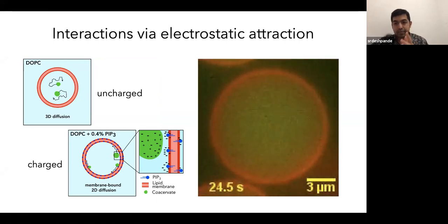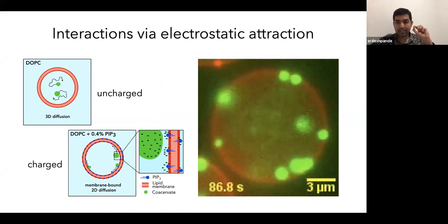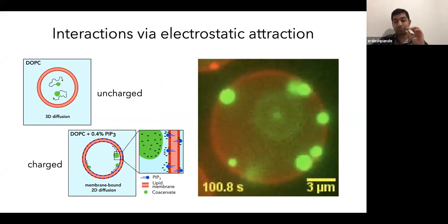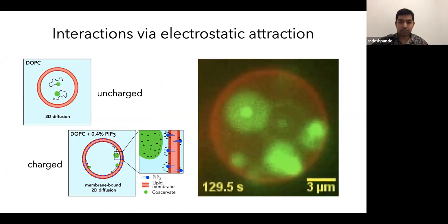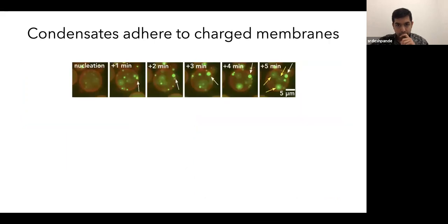We know from zeta potential measurements that our polylysine ATP condensates are a little bit positively charged. And normally they're nicely diffusing inside the liposome. But what if we make our membrane a little bit negatively charged? Would then they stick to the membrane? Let's have a look. So again, this is a pH triggered condensation process. And you can see that as soon as these condensates form throughout the lumen, once they touch the membrane, they just stay there. So this is very different. This looks very different from how it was in the previous videos.